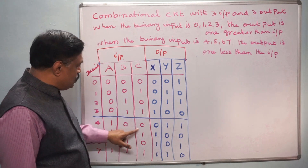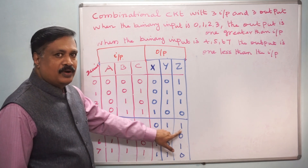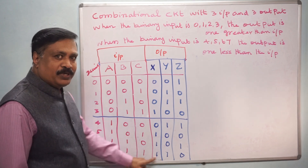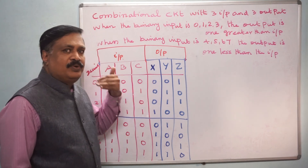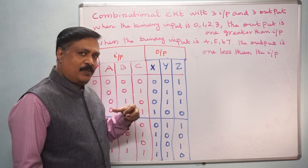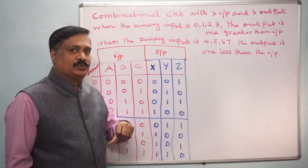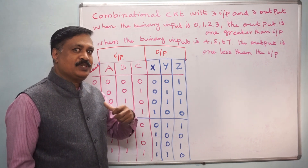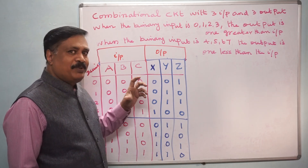So input 1, 0, 0 is 4, and the output should be 3 — that is 0, 1, 1. And when it is 1, 1, 1 — that is 7 — the output is 6. Now, for this truth table we have to design a combinational circuit. A combinational circuit generates output based on its input only, unlike a sequential circuit which depends on input as well as previous output.